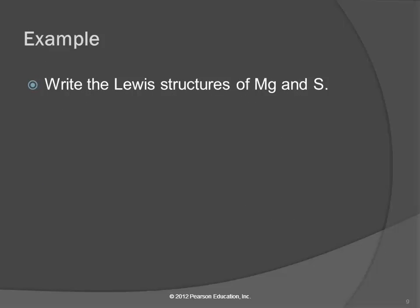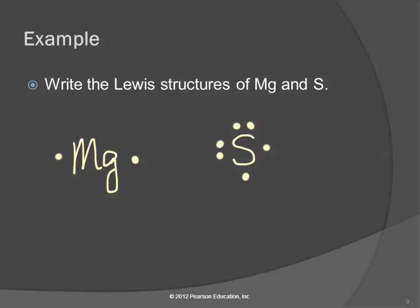Let's look at an example. Let's write the Lewis structures for magnesium and sulfur. Magnesium has the symbol Mg, and sulfur has the symbol S. Magnesium has two valence electrons because it's in group 2A. Sulfur is in group 6A, so sulfur has six valence electrons.